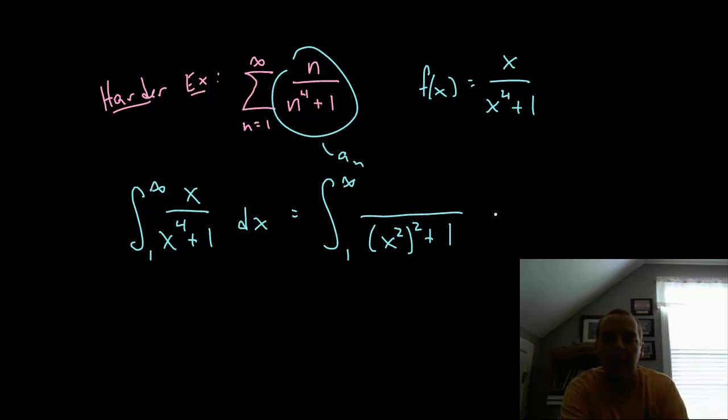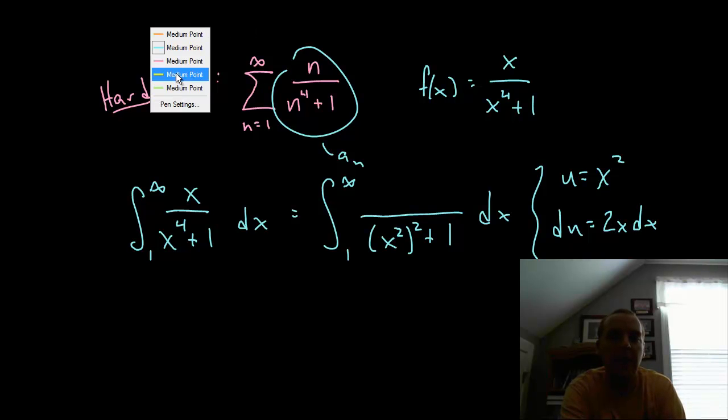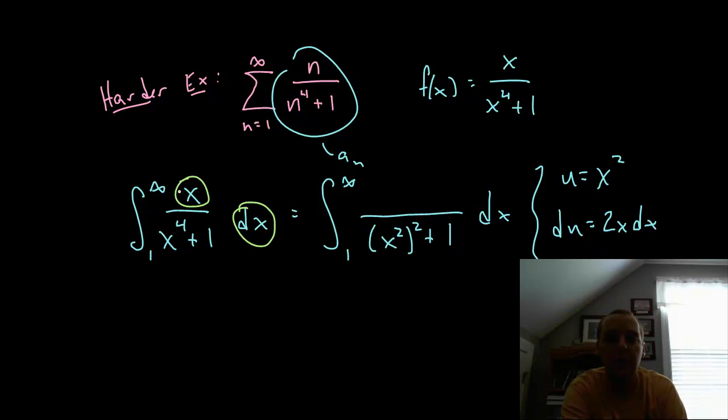And then dx, and so if your choice for u would be x squared to make it u squared plus one, like the template for arctan needs to be. Then the du would be 2x dx. Well, good news for us is I have an x and a dx. I just need a two.